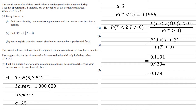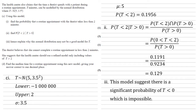Putting those into the calculator we get 0.1191 over 0.9234, which gives 0.129. For Part C(iii) we need to explain why this normal distribution may not be a good model for t. Looking at the probabilities just calculated, P(T < 2) = 0.1956 whereas P(T < 2 | T > 0) = 0.129, so P(T < 2) is considerably larger.